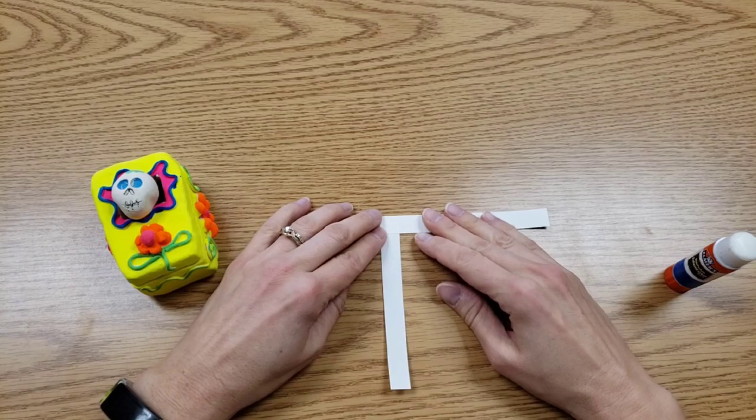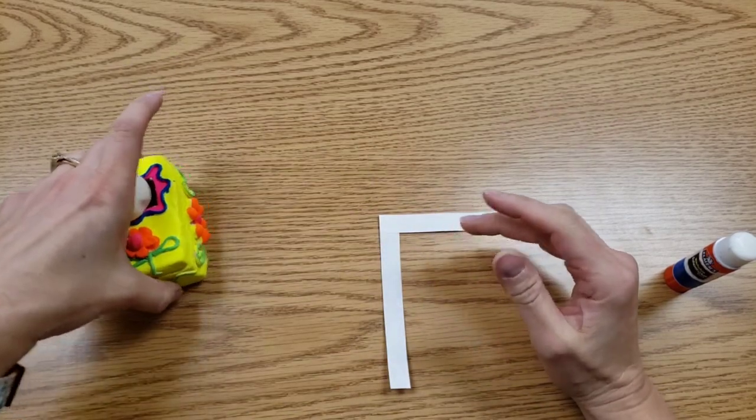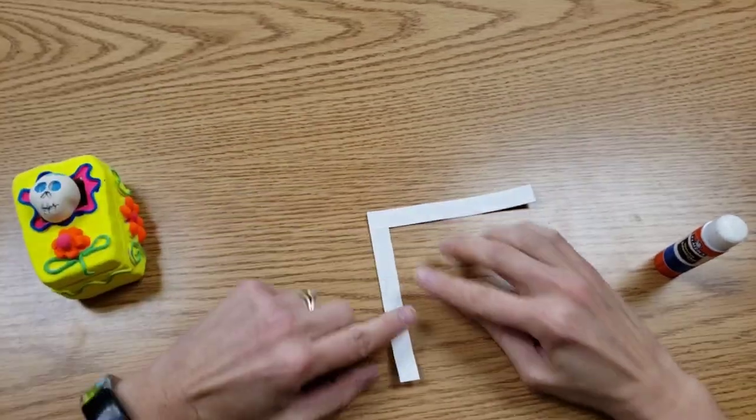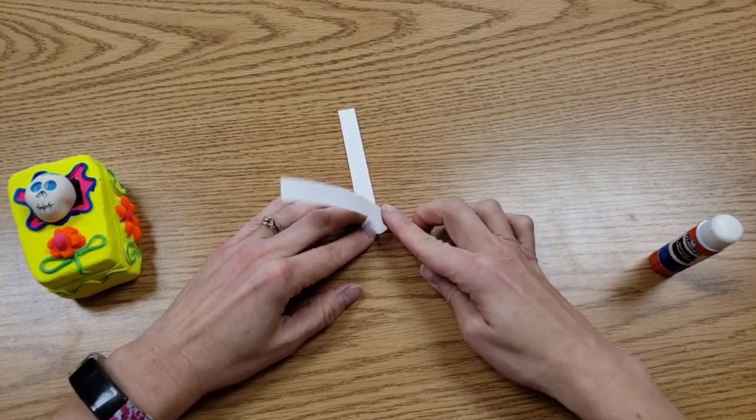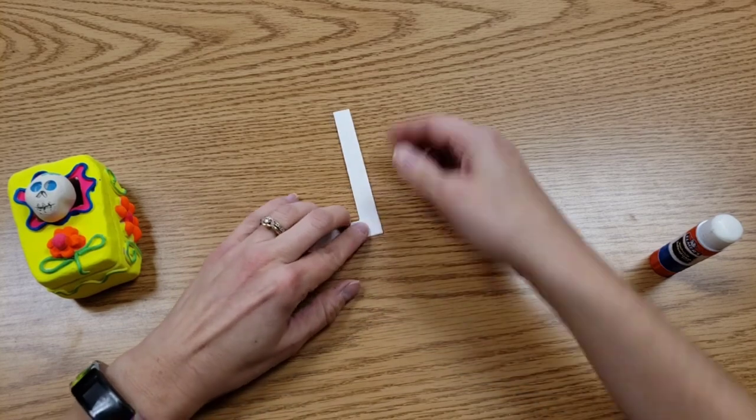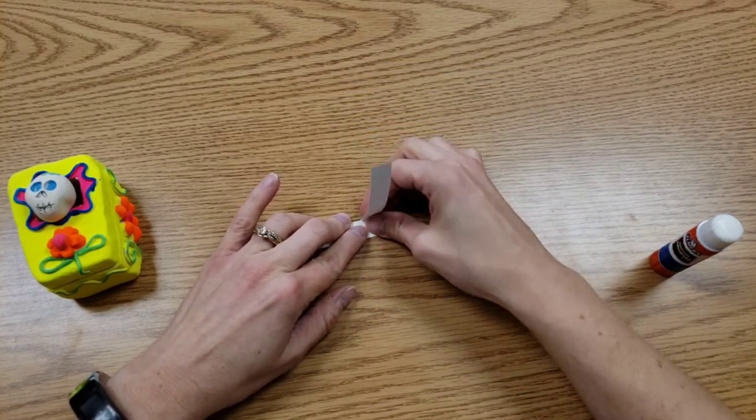And now we're going to fold them back and forth to make an accordion fold. So I'm taking the one on the bottom first, and I'm bringing it up. And then, the one over here. Back and forth.